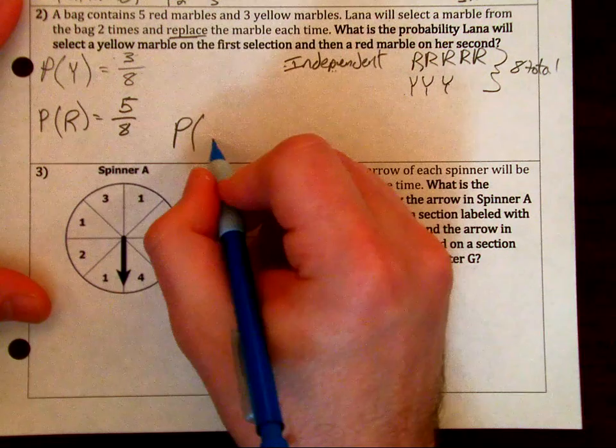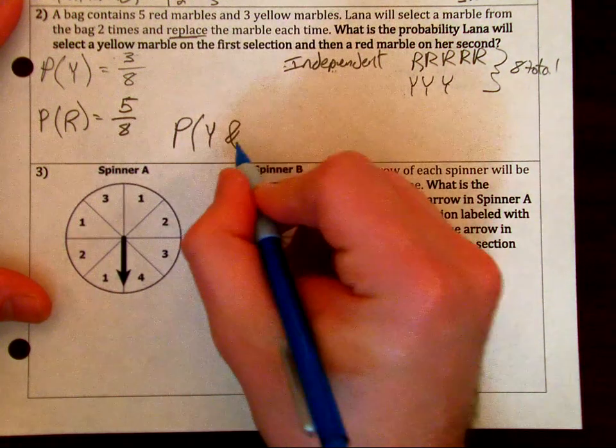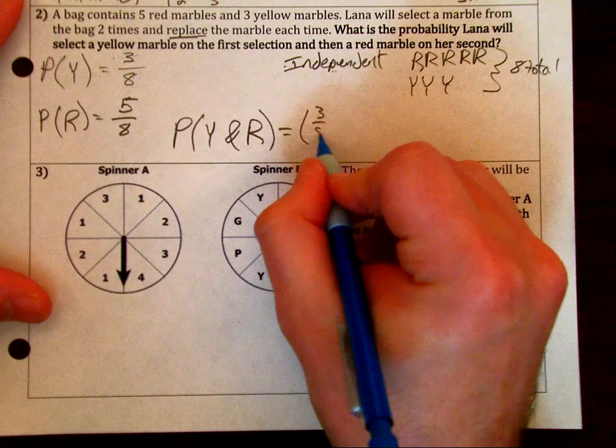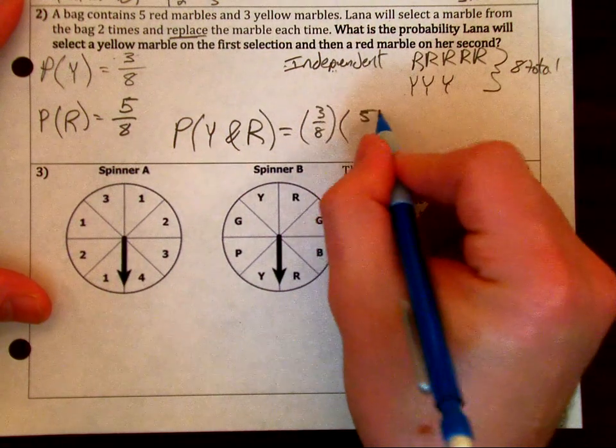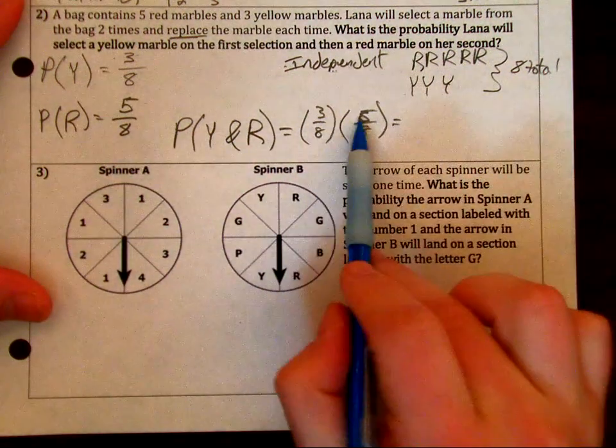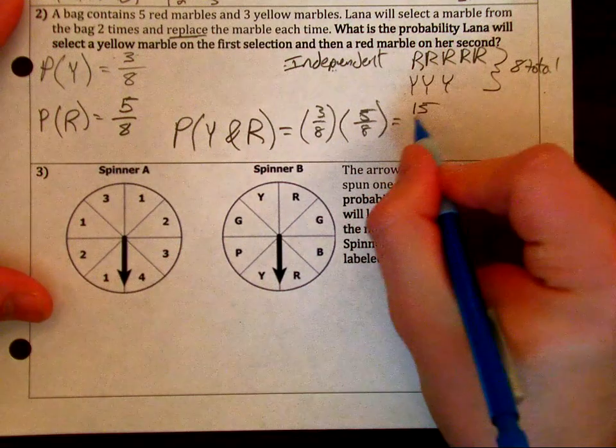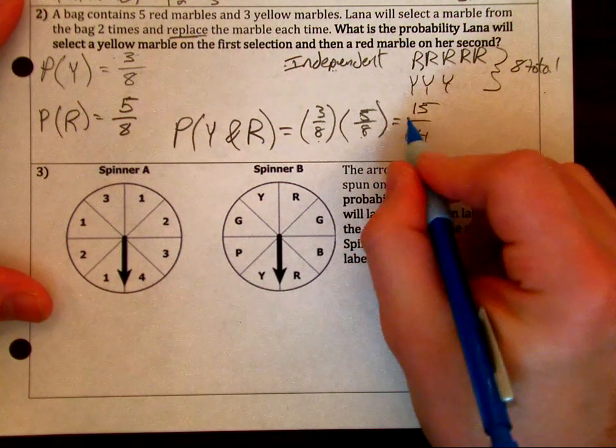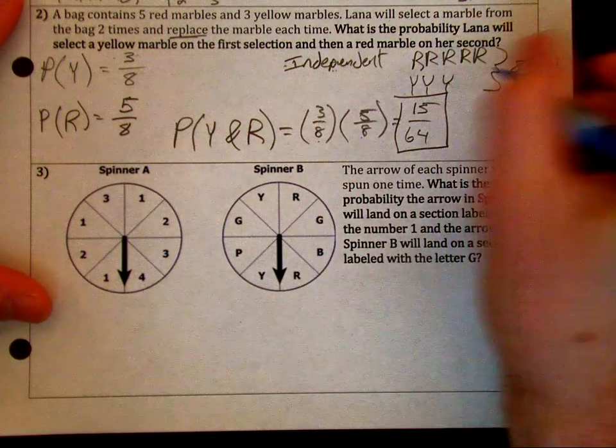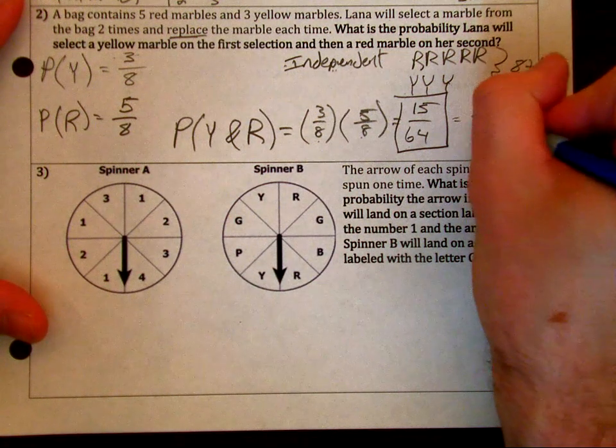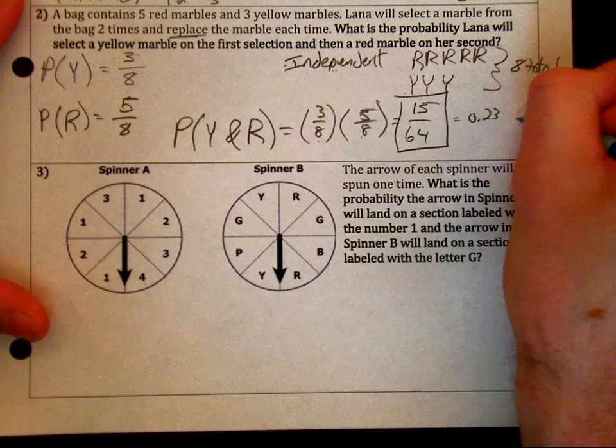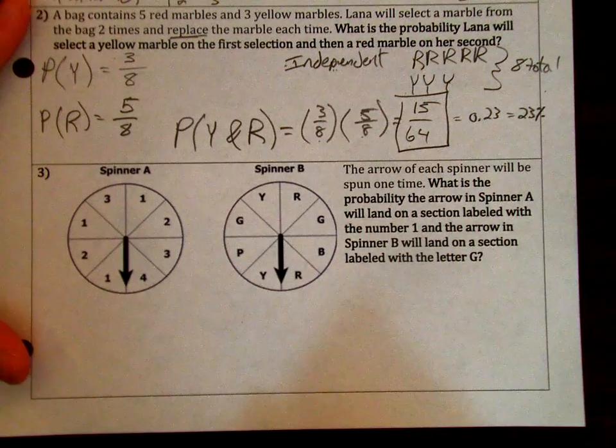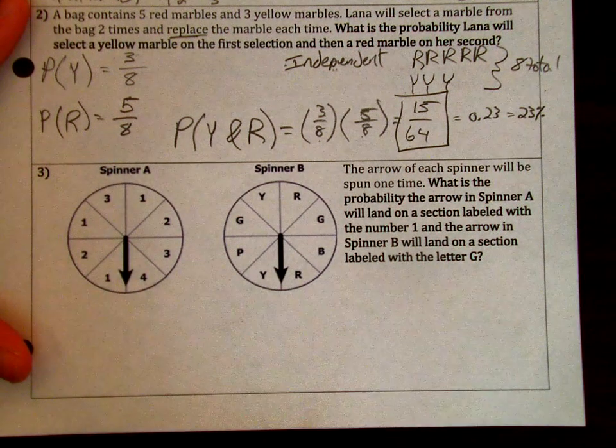Multiply those two fractions together. The probability of yellow and red, three over eight times that five over eight. Multiply the numerators, fifteen. Multiply the denominators, sixty-four. If you wanted to change it to a decimal and percent, that would be 0.23 or 23 percent.